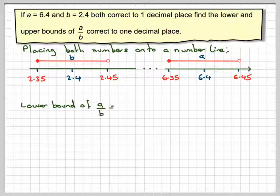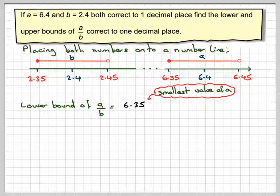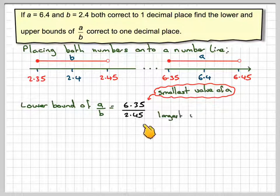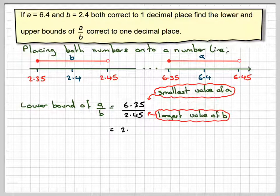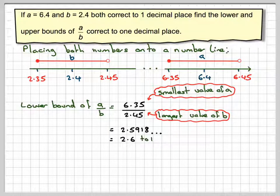Lower bound of A divided by B: you want the smallest A divided by the largest B. That works out to be 2.5918, which rounds to 2.6 to one decimal place.